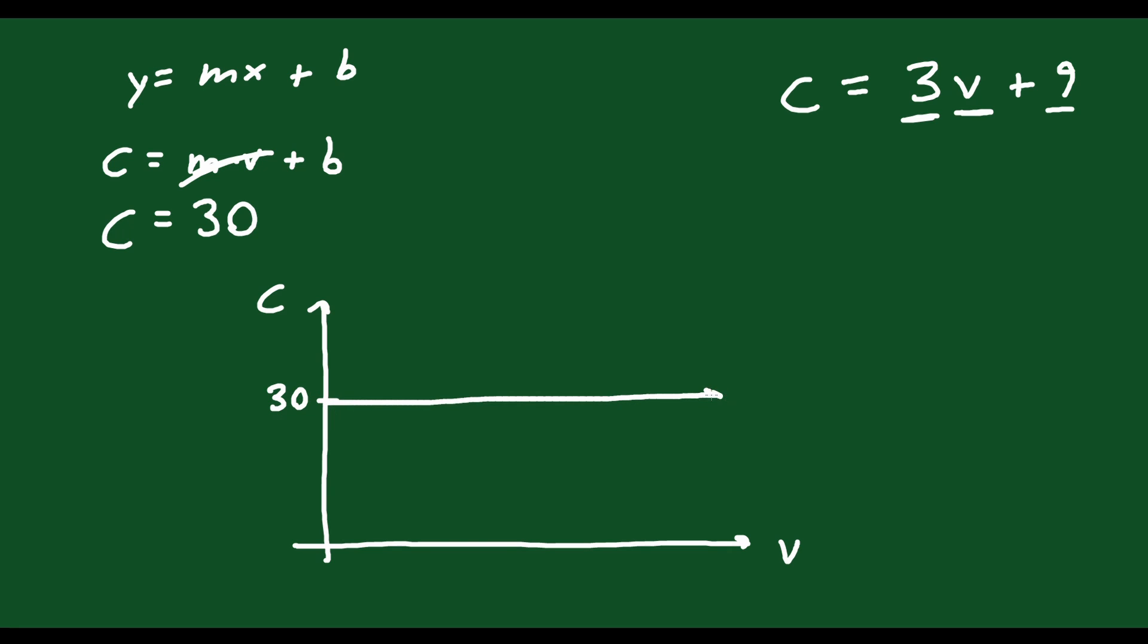So you can see that the cost doesn't change, no matter how many videos, whether the videos are 5, 10, whatever, the cost is exactly the same for plan A. So you can label this as plan A.